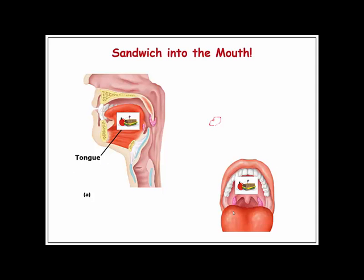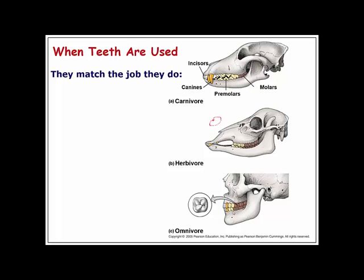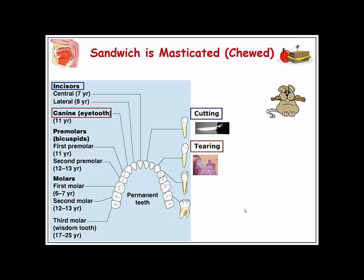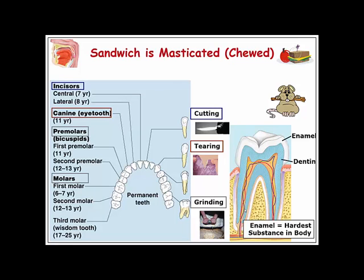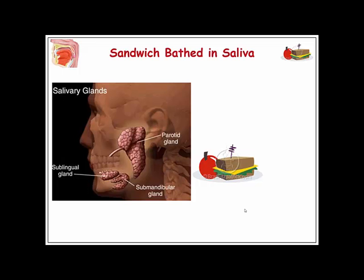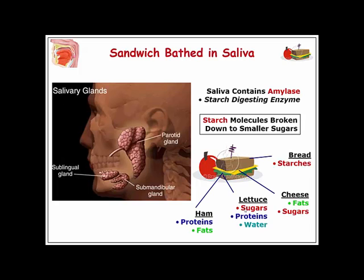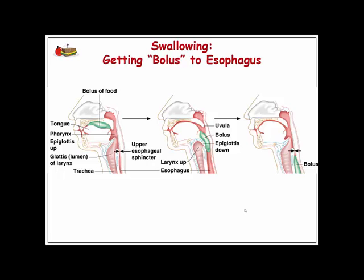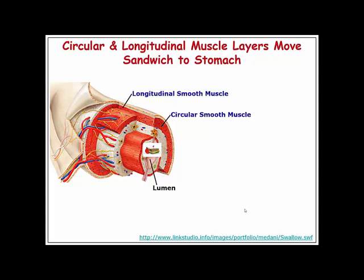The mouth is responsible for physical breakdown of food. You need to know what the tongue and teeth do, as well as the glottis and epiglottis. Carnivores have different types of teeth than omnivores. You should be able to identify the different types of teeth we have and what they are made of. When you eat something like a sandwich, it contains many different types of molecules that the body physically and chemically breaks down for absorption.